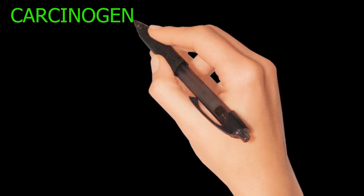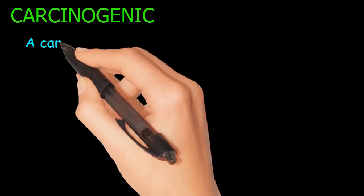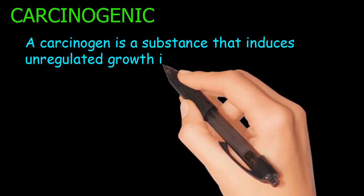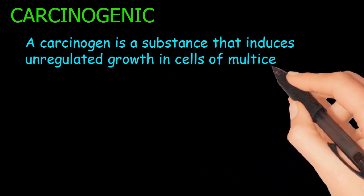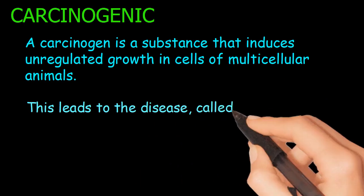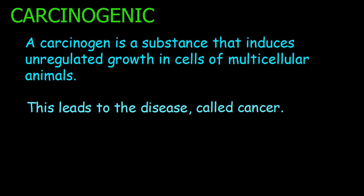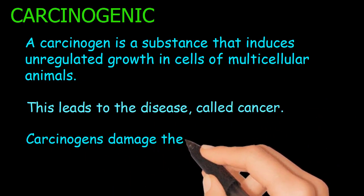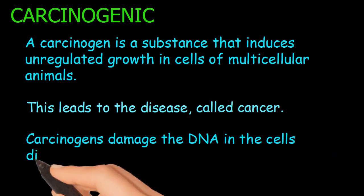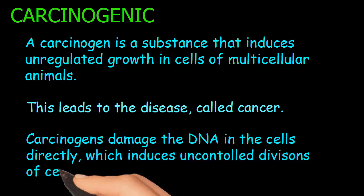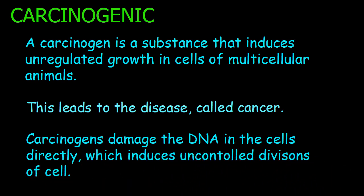Carcinogenic: A carcinogen is a substance that induces unregulated growth in cells of multicellular animals. This leads to the disease called cancer. Carcinogens damage the DNA in cells directly, which induces uncontrolled division of cells.